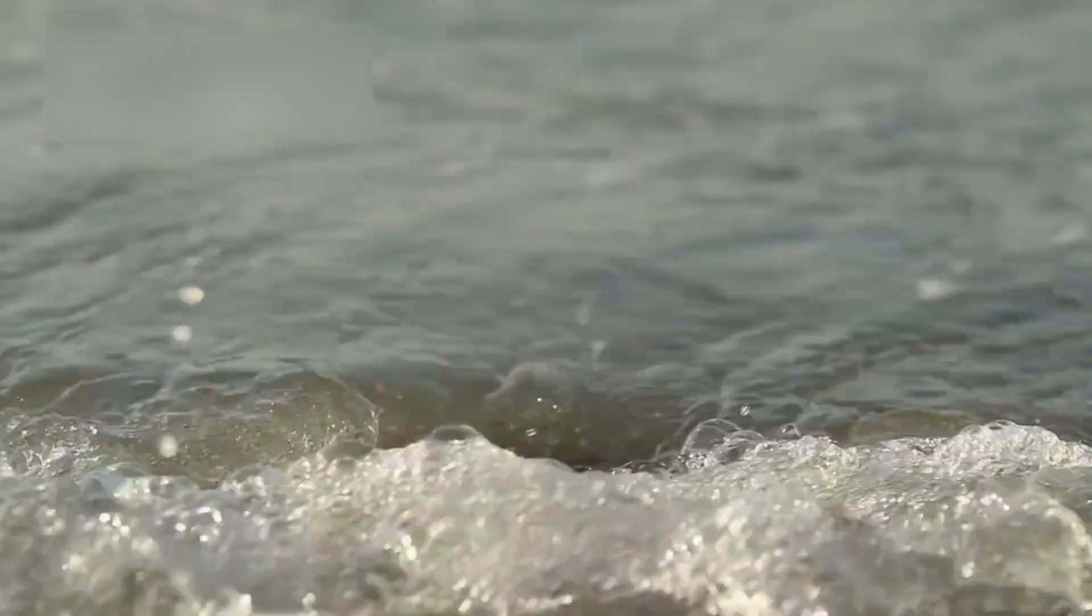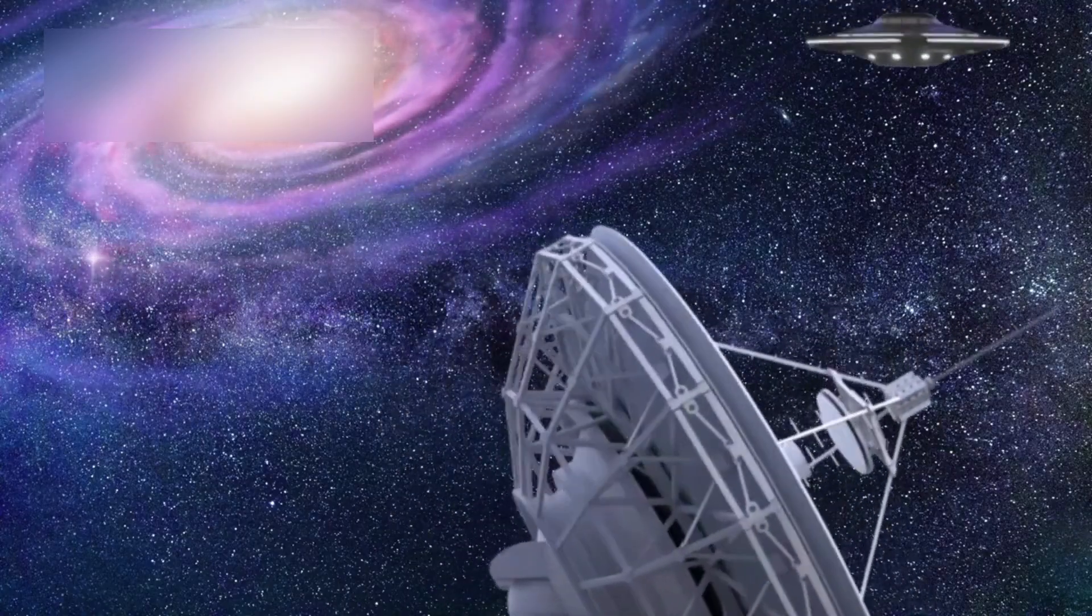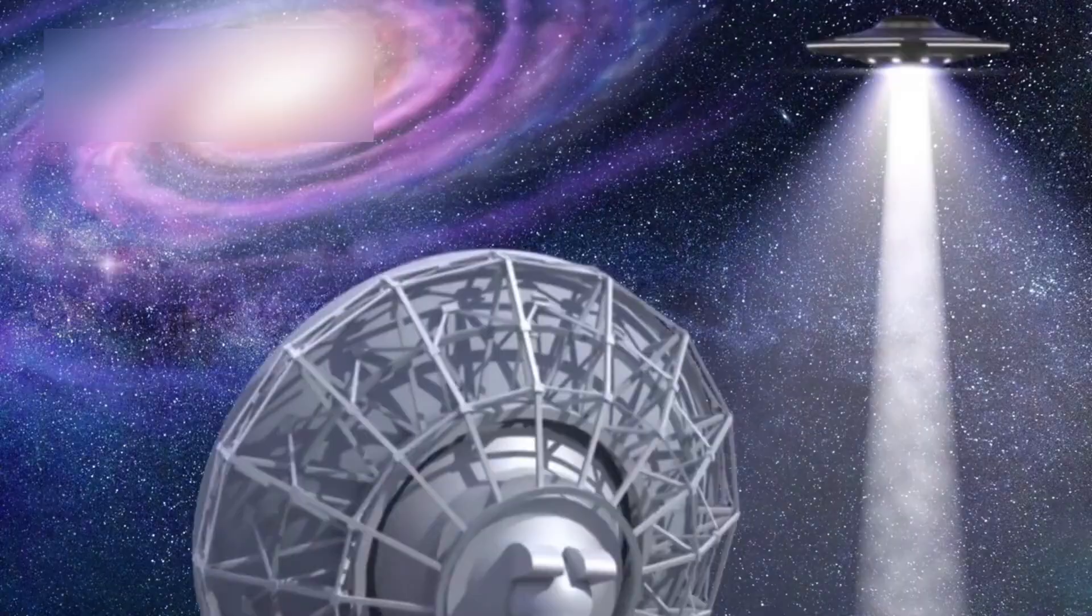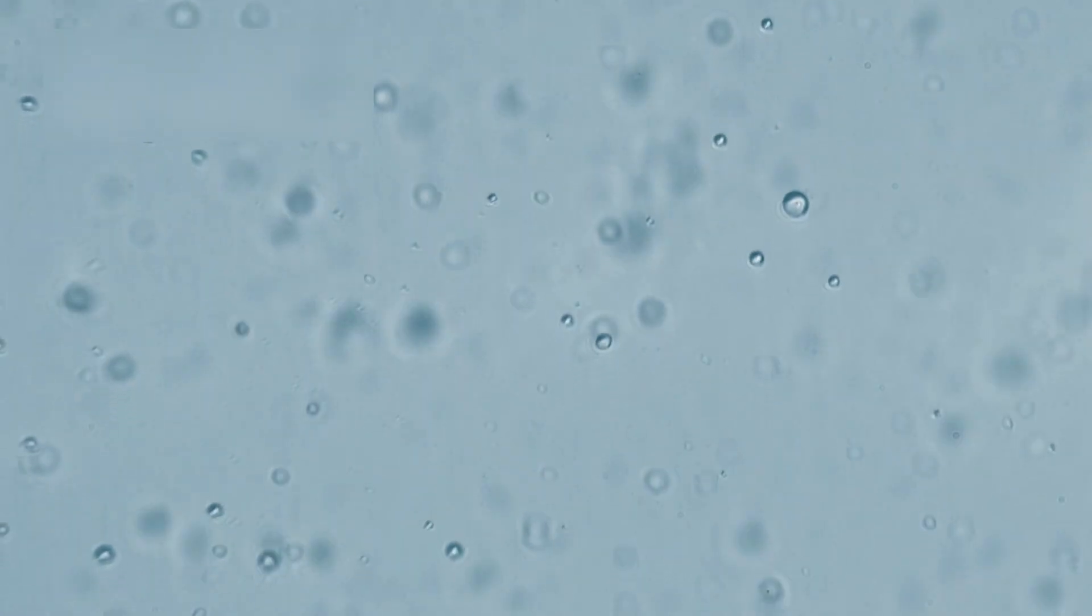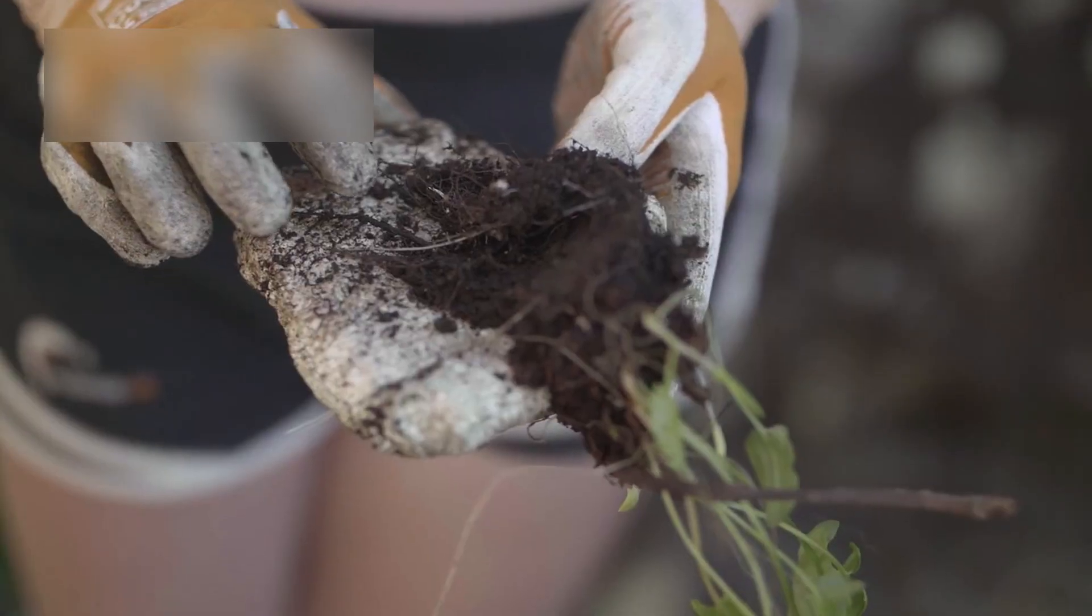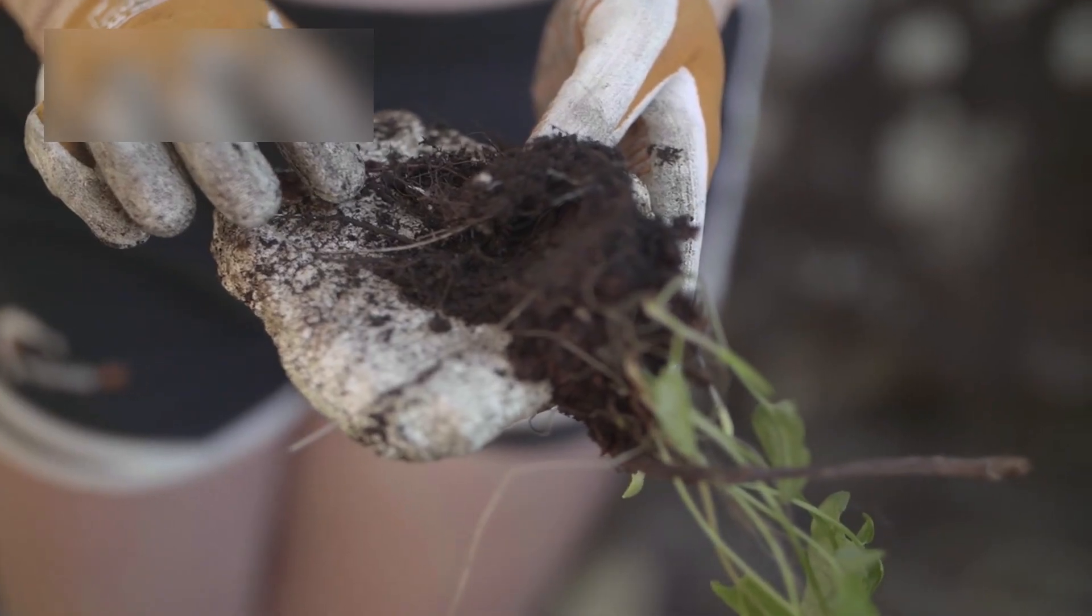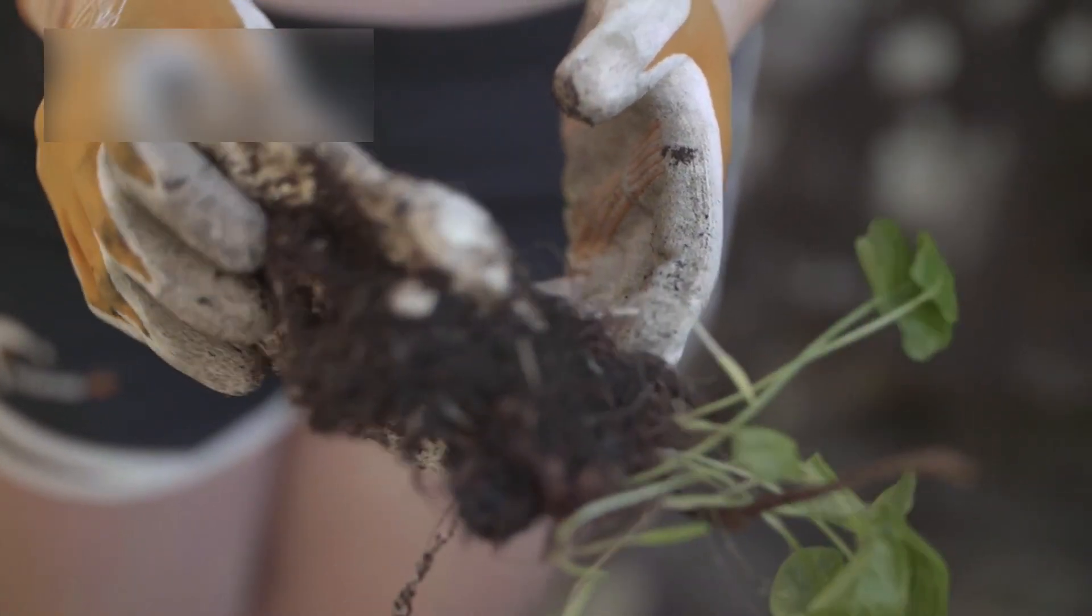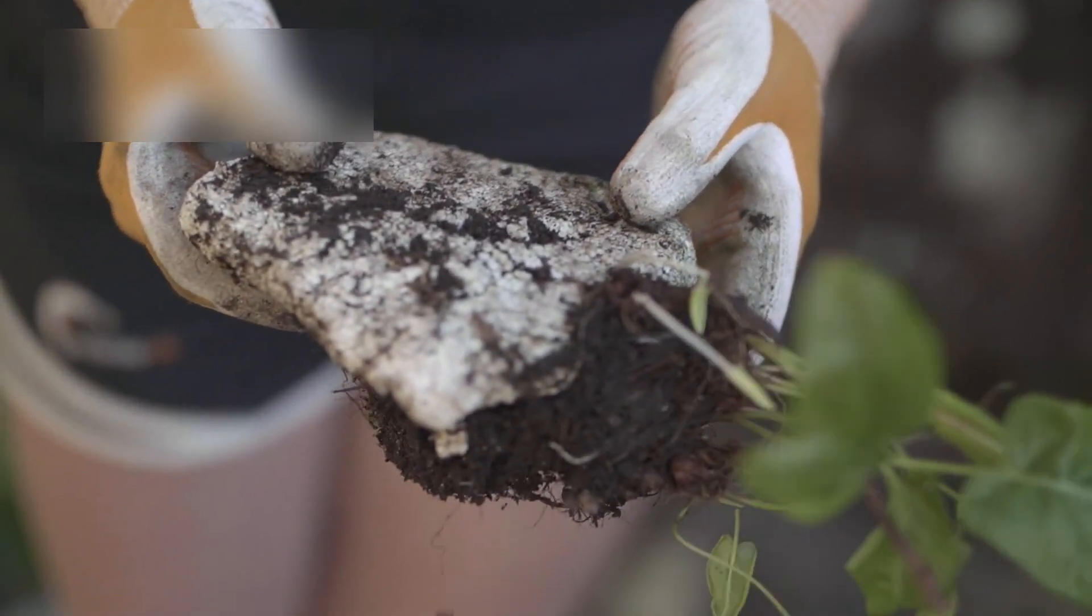But could that ocean actually be alive? It's a bold idea, but not impossible. If microbial organisms have found a way to survive beneath Pluto's ice, they would exist in total darkness, under extreme pressure, and in freezing temperatures, utterly alien to life on Earth. Yet, nature has surprised us before. Physicist Brian Cox once said that if life can exist in a place like Pluto, then it can exist almost anywhere in the universe.